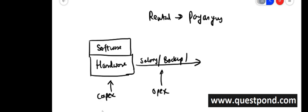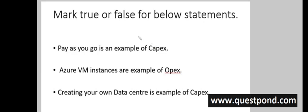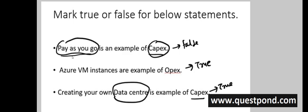With this understanding of CapEx and OpEx, let's answer Question 1. Mark the below statements true or false. 'Pay as you go is an example of CapEx' — False, because pay-as-you-go is the complete opposite of CapEx. 'Azure VM instances are an example of OpEx' — True, you can create a VM, use it for 3–4 days, and delete it. 'Creating your own data center is an example of CapEx' — True, because you're responsible for hardware procurement, licenses, and all infrastructure. Answers: False, True, True.